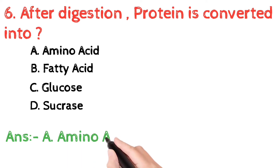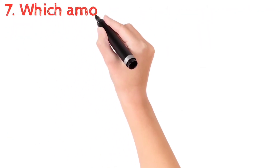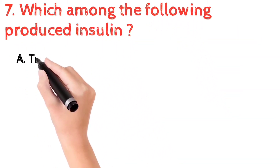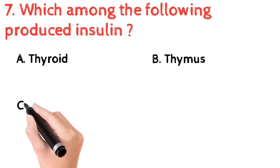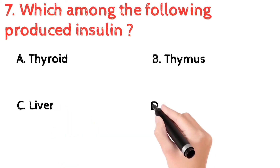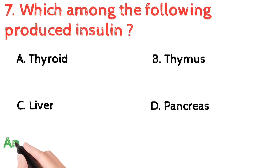The correct answer is a) amino acid. During digestion, proteins break down to form amino acids. Amino acids are the building blocks of life — for example, glutamine, tyrosine, etc. Question number 7: which among the following produces insulin? a) thyroid, b) thymus, c) liver, d) pancreas.